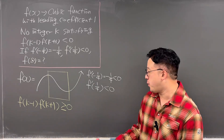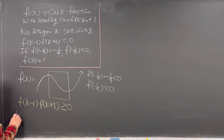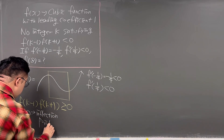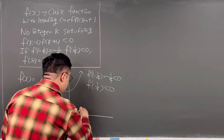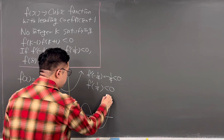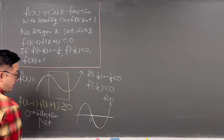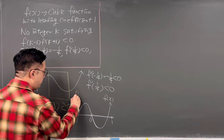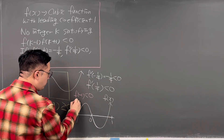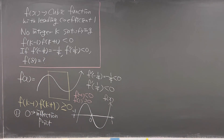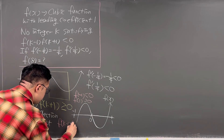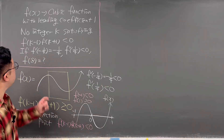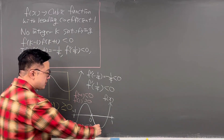Case number 1 is if 0 is an inflection point. Your graph is looking like this, and 0 has to be here. Negative 1 and positive 1 should be located such that f(-1) is negative and f(1) is positive. In this case, f(k-1) times f(k+1) would be negative — meaning there is a k value satisfying this. But the question said there's no such integer k, so this case is not what we need.